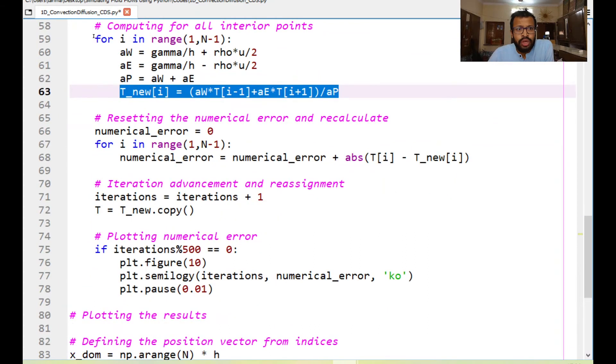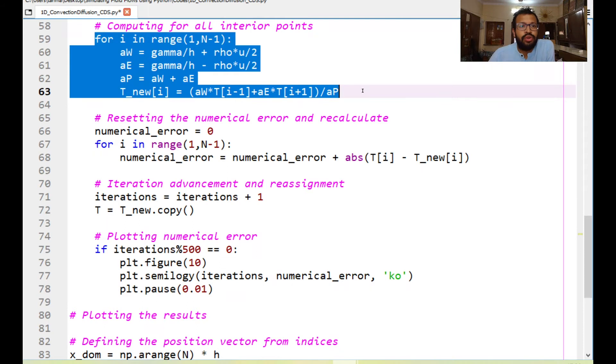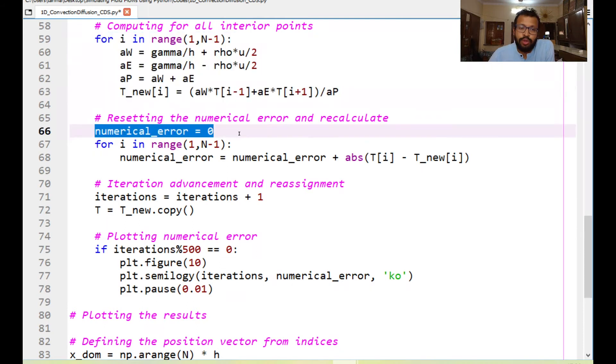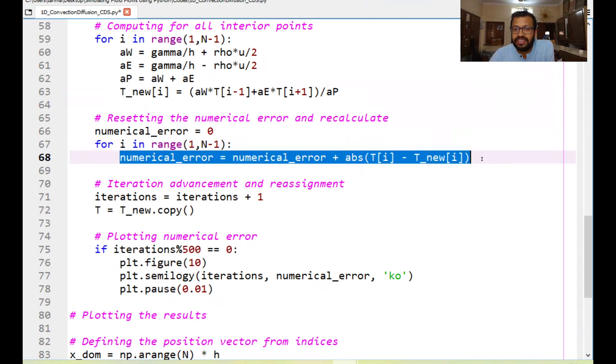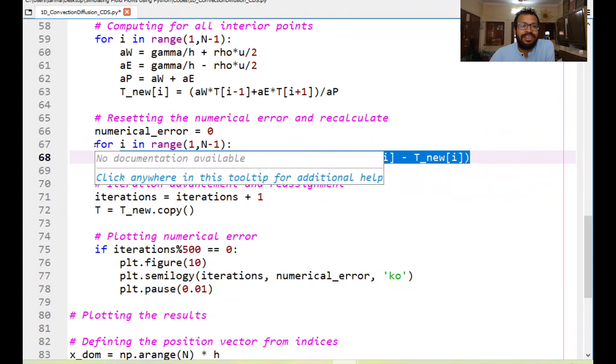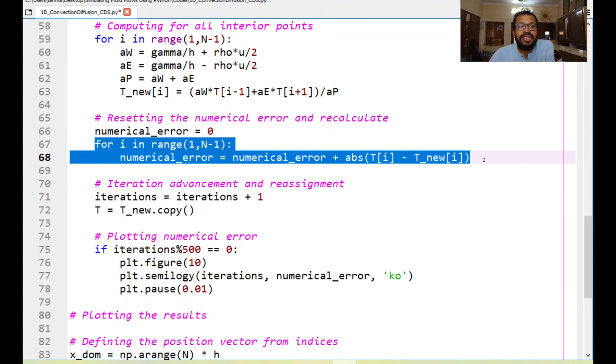So once we do these calculations for the loop then we recalculate the numerical error. Before we recalculate it we reset its value to 0 and then we write the usual expression that for the same number of points the numerical error is nothing but the cumulative sum of the absolute differences. So this particular loop we have looked at it a lot of times so this would just calculate the cumulative value of numerical error over all the grid points.